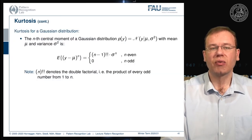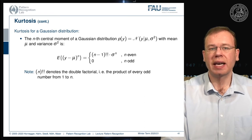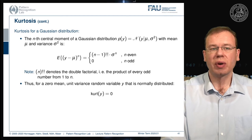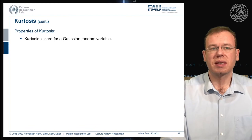For a Gaussian distribution with mean mu and variance sigma squared, the nth central moment is given by (n−1) double factorial times sigma to the power of n if n is even, and zero if n is odd. For a zero-mean, unit-variance Gaussian random variable, the kurtosis is therefore zero.